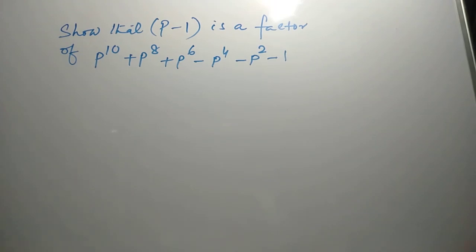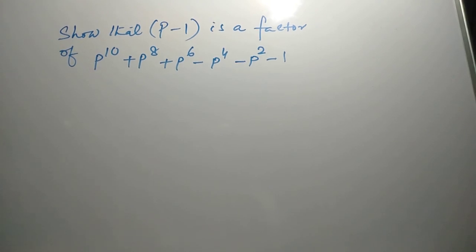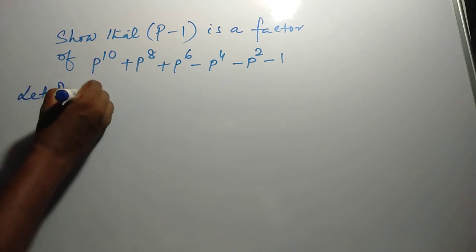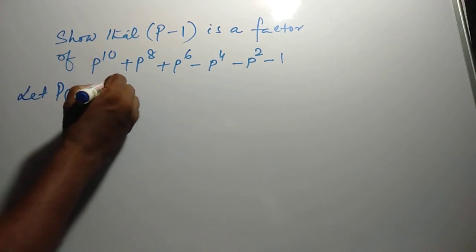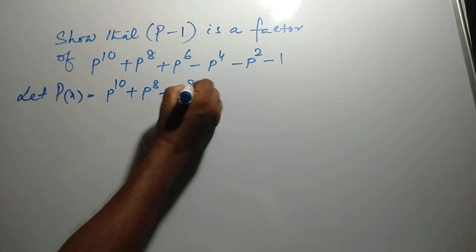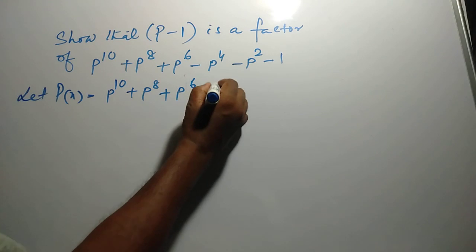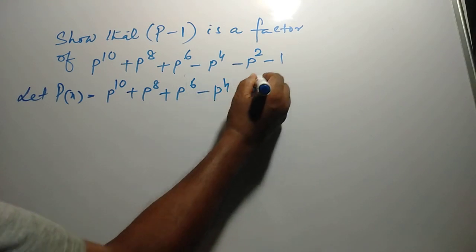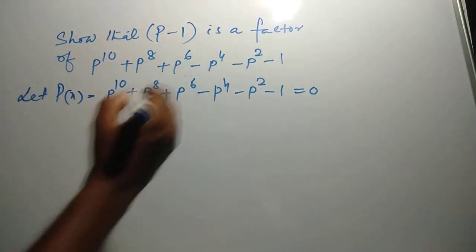So that p minus 1 is a factor of p to the power 10 plus p to the power 8 plus p to the power 6 minus p to the power 4 minus p squared minus 1. Let p of x equal to p¹⁰ + p⁸ + p⁶ - p⁴ - p² - 1 = 0.